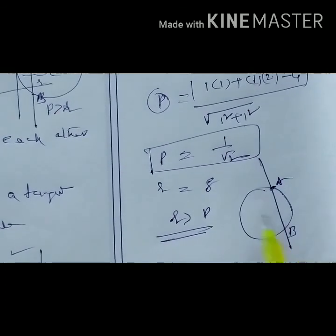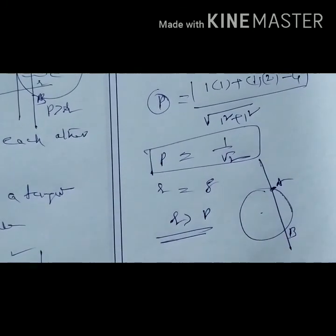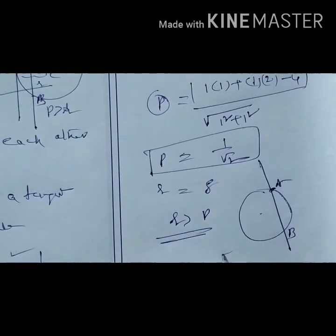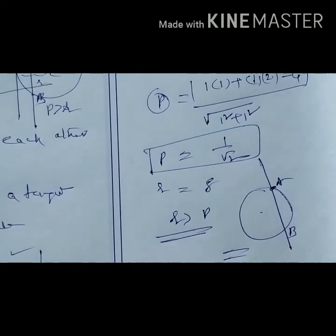This is the position of the line relative to the circle.